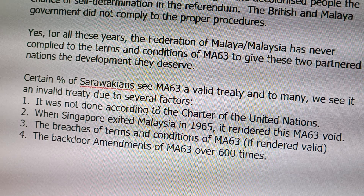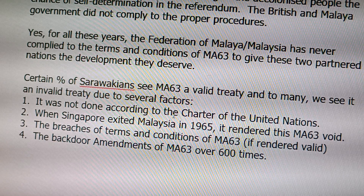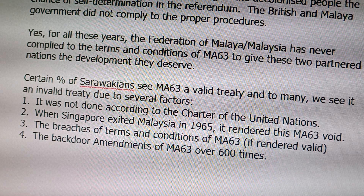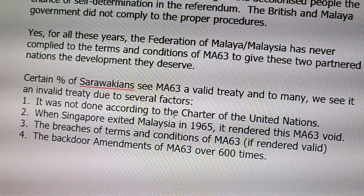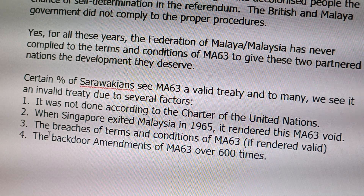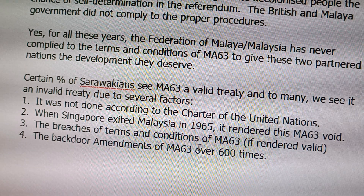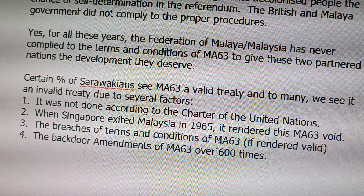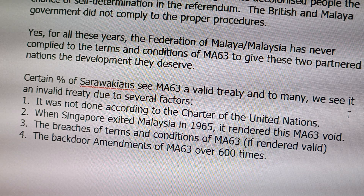First, it was not done according to the charter of the United Nations. Two, when Singapore exited Malaysia in 1965, it rendered MA-63 void. Three, the breaches of terms and conditions of MA-63, if rendered valid. Four, the unilateral amendment of MA-63 over 600 times. All these factors can render the MA-63 agreement invalid. Thank you.